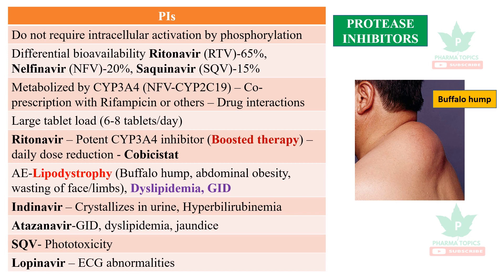The adverse effects of protease inhibitors most importantly include lipodystrophy — seen as a buffalo hump, abdominal obesity, and wasting of the face and limbs. Other adverse effects are dyslipidemia and gastrointestinal disturbances. Indinavir crystallizes in urine and causes hyperbilirubinemia. Atazanavir causes gastrointestinal disturbance, dyslipidemia, and jaundice. Saquinavir causes phototoxicity, and lopinavir may cause ECG abnormalities.